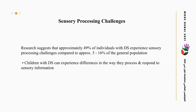Today I will talk about sensory processing challenges that children with Down syndrome may face. The latest research suggests that approximately 49% of individuals with Down syndrome experience sensory processing challenges, compared to approximately 5 to 16% of the general population. That 49% is a huge number. We need to focus on sensory processing because it also affects how the child will react to all activity in their daily life skills.